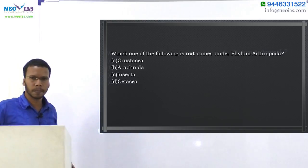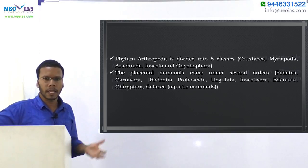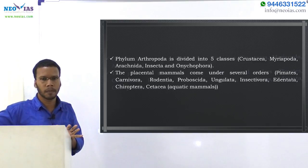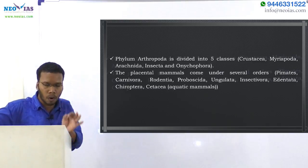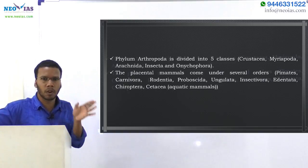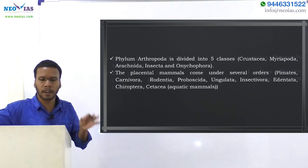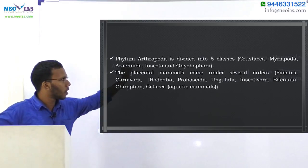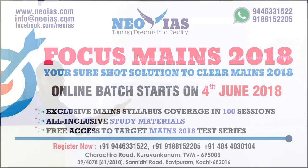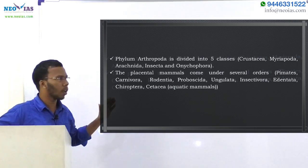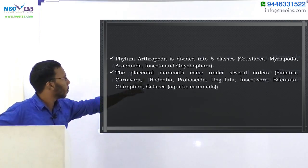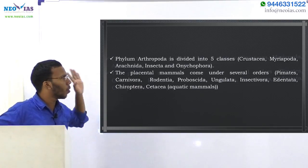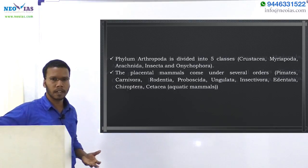Phylum Arthropoda — organisms with jointed bodies and jointed legs — is divided into five classes: Crustacea, Myriapoda, Arachnidae, Insecta, and Onycophora. These are the five classes under Arthropoda.